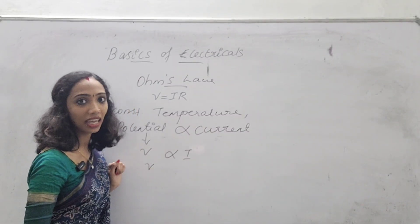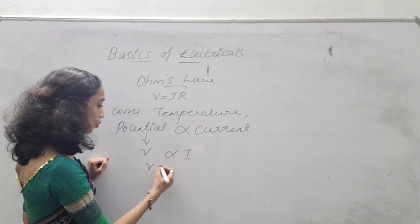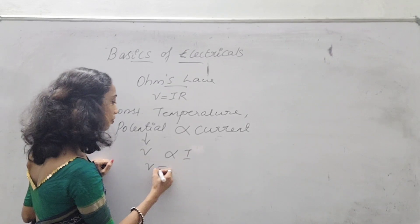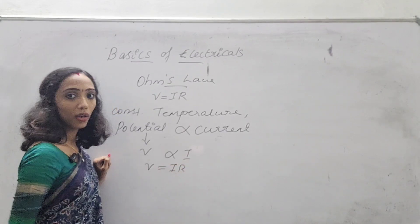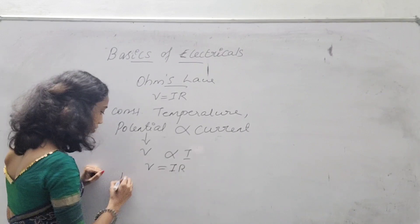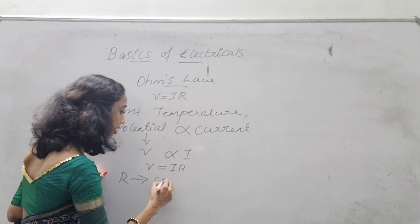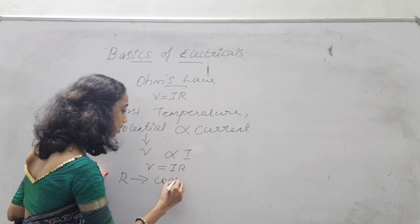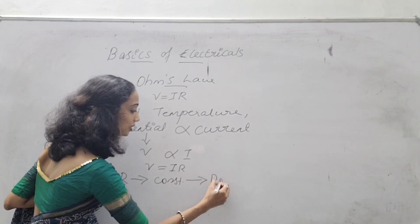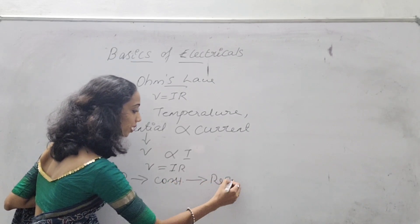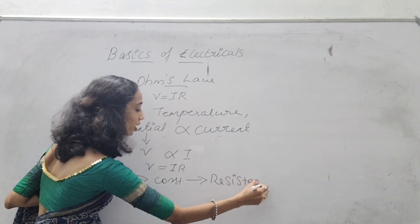We remove the proportionality sign. V is equal to I into R. Where R is the constant called resistance.